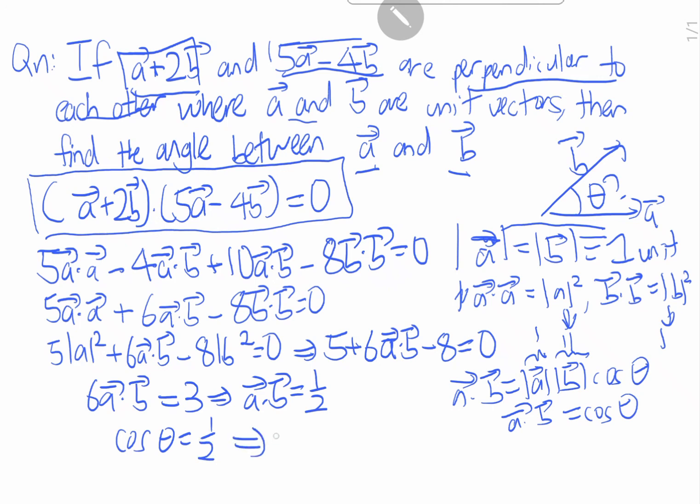Therefore theta equals to 60 degrees. So now we have already found the angle between a and b to be 60 degrees.